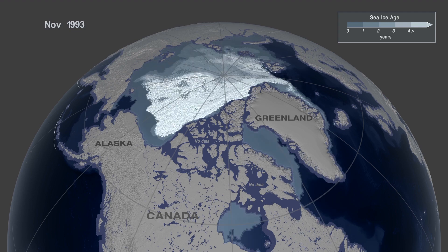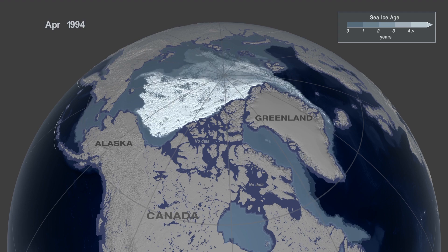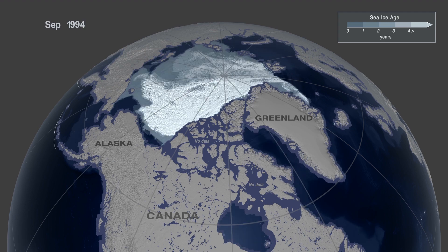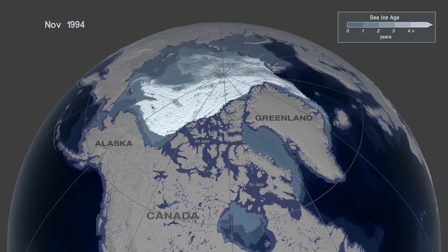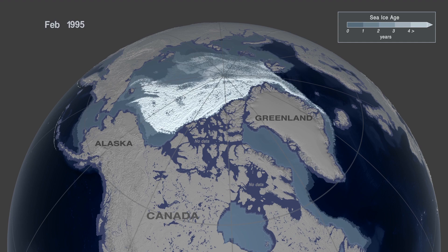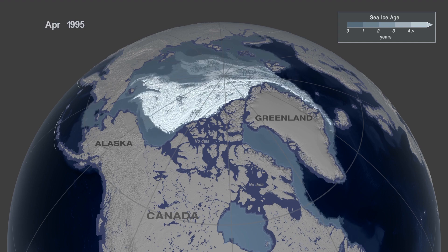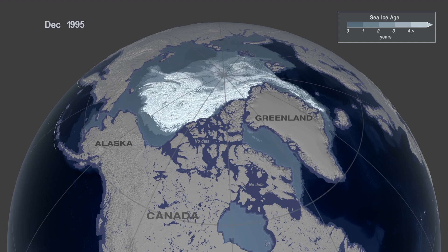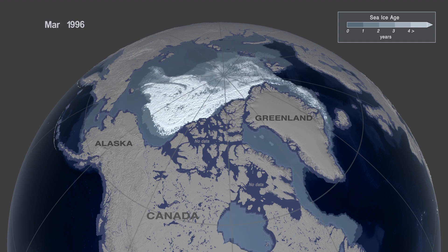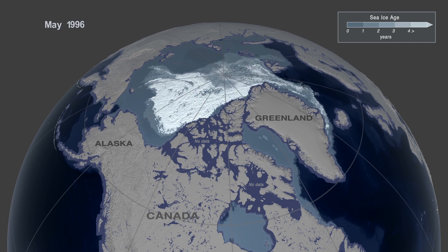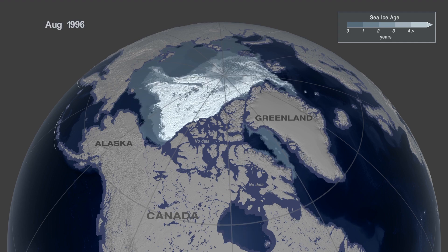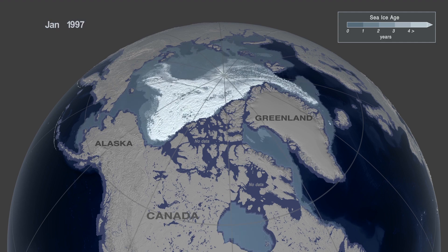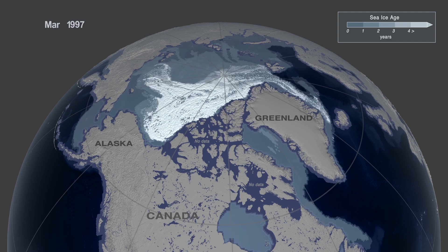Over the years, the ice pulses around and moves towards the top along the coast of Greenland. The older ice eventually moves out of the Arctic and into the North Atlantic, where it melts.